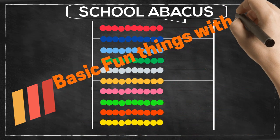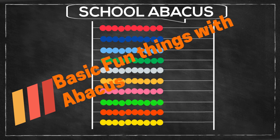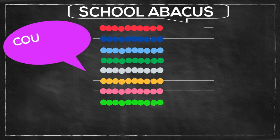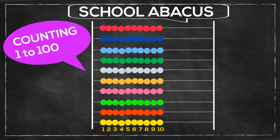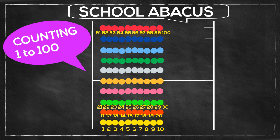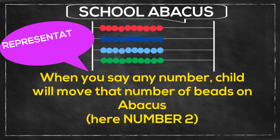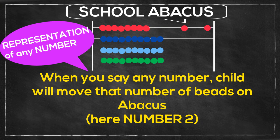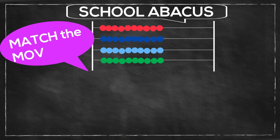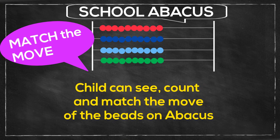Now, how to teach abacus for preschoolers or beginners: basic fun things for young kids. We can let the child count all the numbers from one to a hundred with the beads. Start teaching number representation by abacus — for example, we say the number two and the child needs to move two beads. We will move a certain number of beads and the child needs to see it, count it, and move the same number of beads on the abacus.